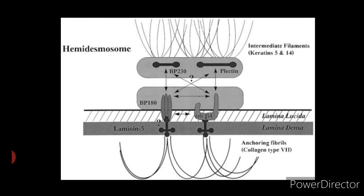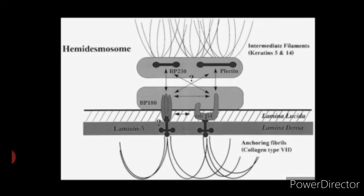These plaques are attached to the extracellular matrix, the basal lamina, through proteins called integrins. The basal lamina contains collagen fibrils. Between these fibrils are the laminin fibrils that anchor the hemidesmosomes to the basal lamina.